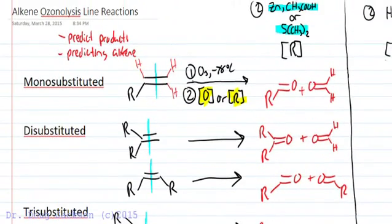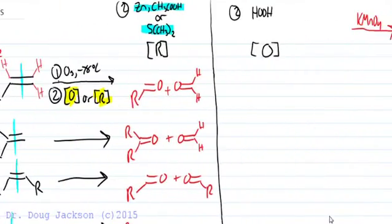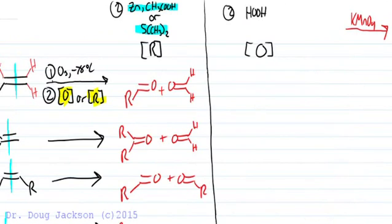Now let's look at the oxidative workup of ozonolysis, which is exactly the same as potassium permanganate oxidation. So we could just use potassium permanganate and not a two step reaction.